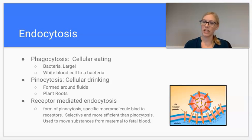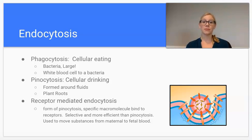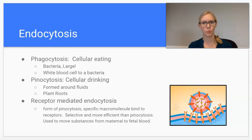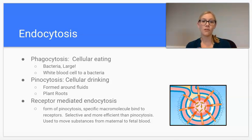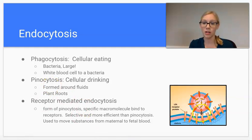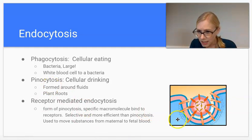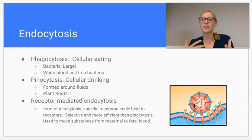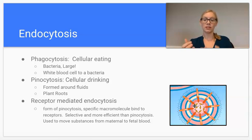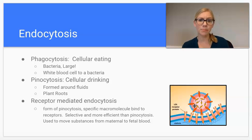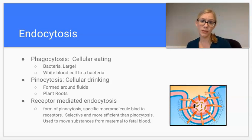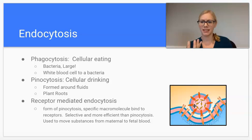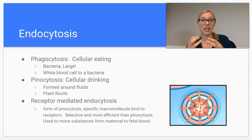Pinocytosis is kind of like cellular drinking — it forms around fluids and brings those fluids into the cell. Then we have receptor-mediated endocytosis, which is much more specific. It's a form of pinocytosis for specific macromolecules. The cell has little receptors on its membrane that have to match up like a puzzle piece with whatever molecule is being brought in. It's much more efficient, effective, and selective than pinocytosis.